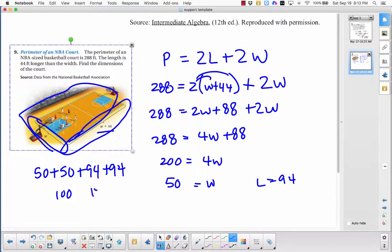94 and 94 is 188. And 100 plus 188, sure enough, is 288. Okay, hopefully that helps with that question.